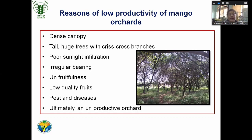Another reason is irregular bearing. Bearing in mango has a peculiarity of biennial bearing — one year on, one year off. One year good production will be there; the next year, the tree will automatically reduce its production to balance the growth. That is a natural phenomenon in mango that can be regularized by giving proper canopy management.